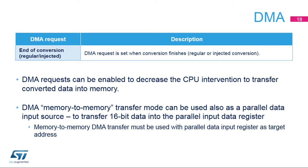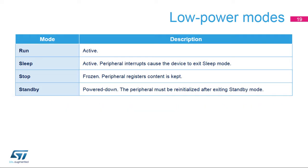To decrease the CPU intervention, conversions can be transferred into memory using a DMA transfer. DMA transfers for injected and regular conversions can be enabled separately. The DMA controller can also be used as a method for fast data transfers into parallel data registers. In this case, the parallel data is transferred from the memory buffer into the parallel data register using the DMA mechanism, configured in memory-to-memory transfer mode where the target address is the address of the parallel input data register.